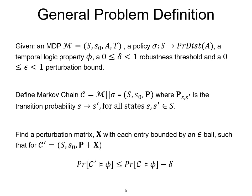Now formally, the general problem definition looks briefly like this—the details are in the paper. Given an MDP M, given a policy σ, and given a specification in temporal logic property φ, and given δ a robustness threshold and ε a perturbation bound, we can define a Markov chain C which is the application of policy σ to M. Now this Markov chain has some probability matrix P, and what we want is to find the perturbation matrix X.